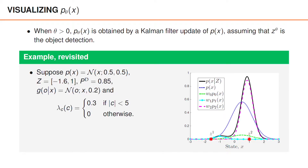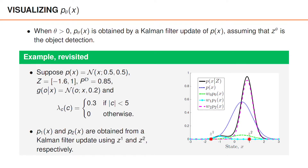For visualization, let us return to the example that we studied in the video about the complete measurement model. The only difference here is that we now have a Gaussian prior as well, in this case with mean 0.5 and variance 0.5, and we are visualizing the posterior density instead of the measurement likelihood. What I want you to focus on are the curves W0, P0, W1, P1, and W2. P1 is obtained from a Kalman filter update using z1, P2 is obtained from a Kalman filter update using z2, whereas P0 is identical to the prior.